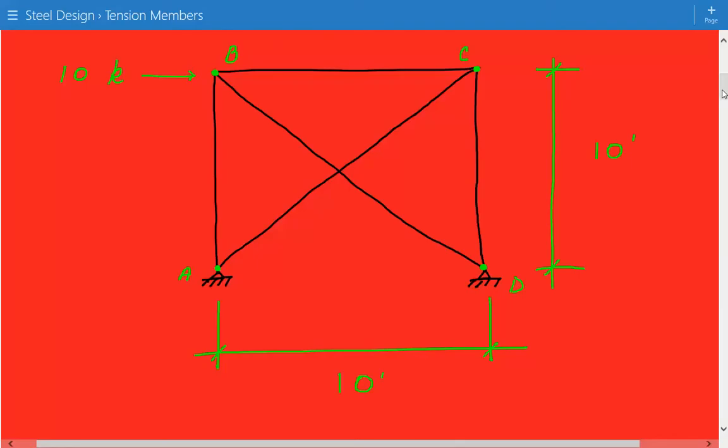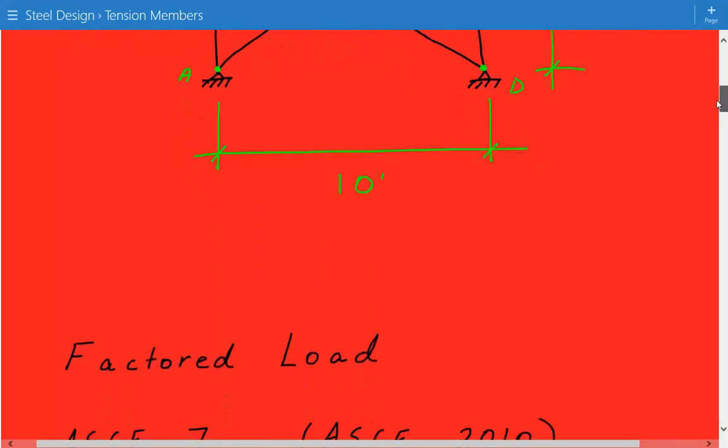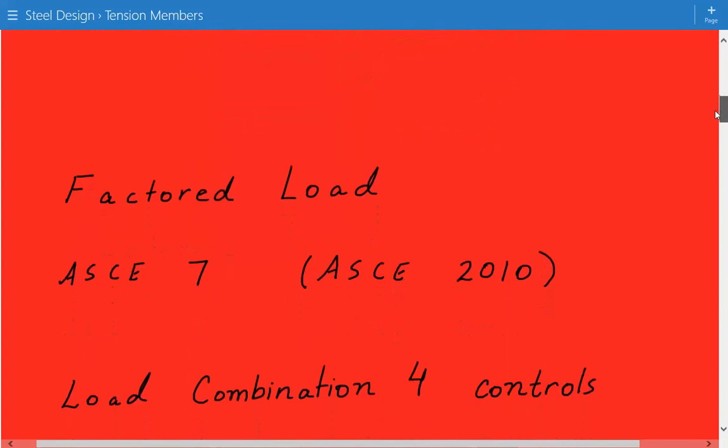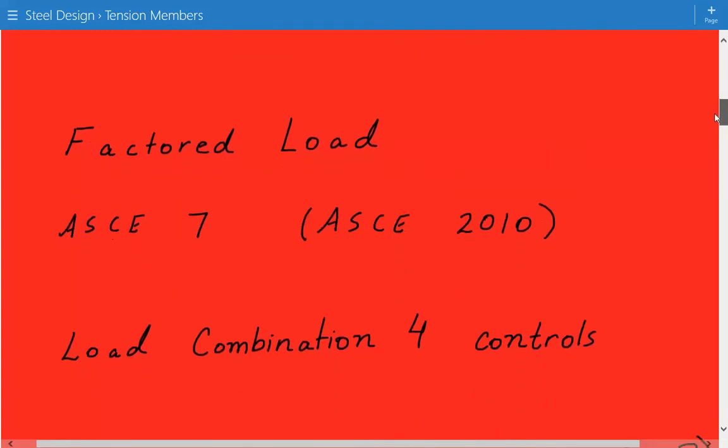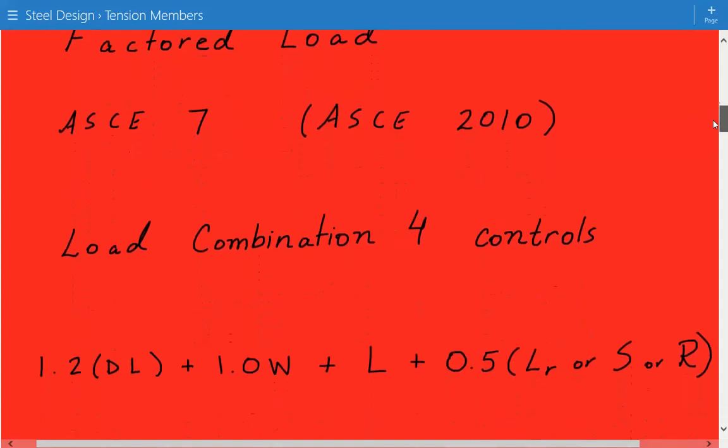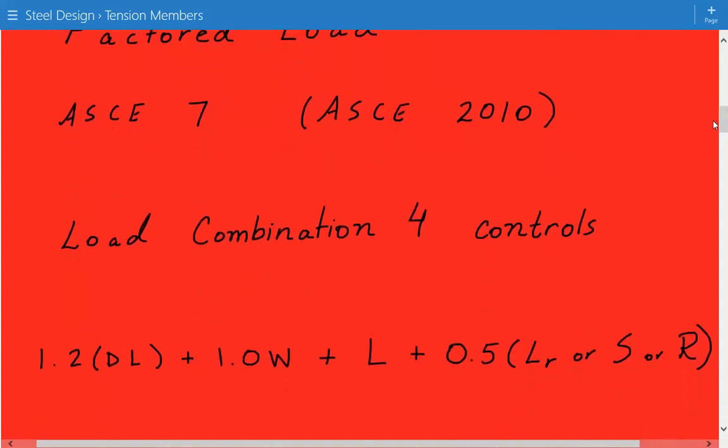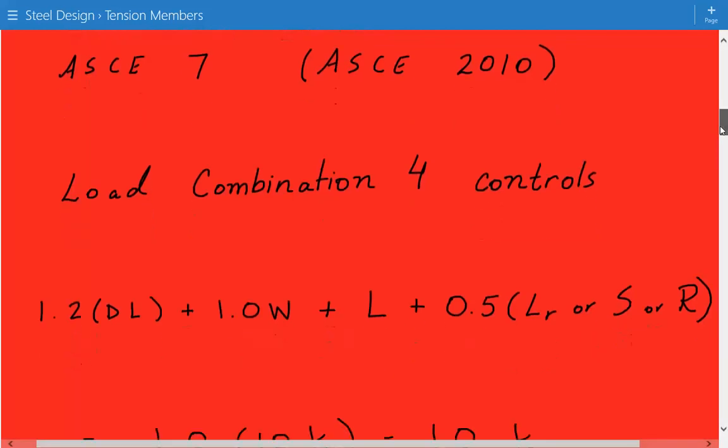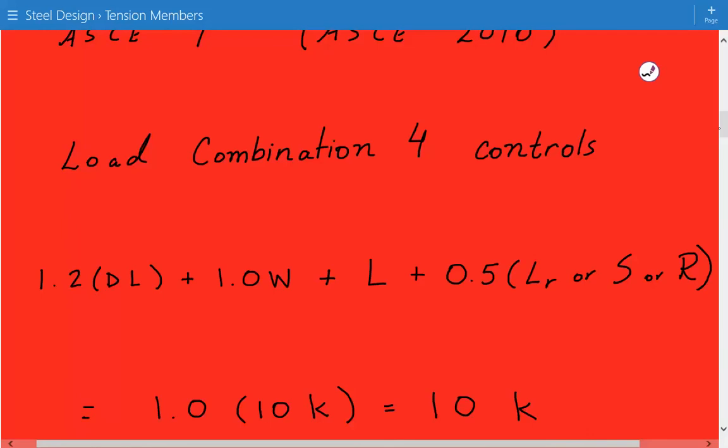And now coming back to our pin-connected structure. The first thing we need to do is calculate the factored load based on ASCE 7 load combinations, and we're using the code ASCE 2010. So since we only have a wind load, load combination 4 is going to be the controlling case. And here is load combination 4: it's 1.2 times dead load plus 1.0 times wind load plus live load plus 0.5 times the roof live load or snow load or rain load.